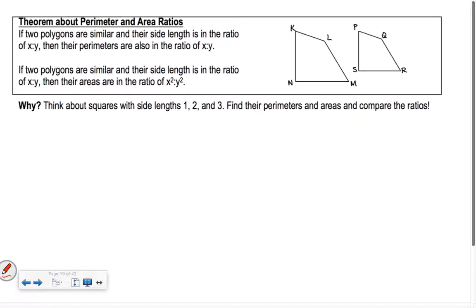The theorem about perimeter and area ratios: if two polygons are similar and their side lengths are in the ratio of x to y, their perimeters are still in the ratio of x to y — the same ratio. But for areas, if sides are in the ratio x to y, then the areas end up being in the ratio x squared to y squared.